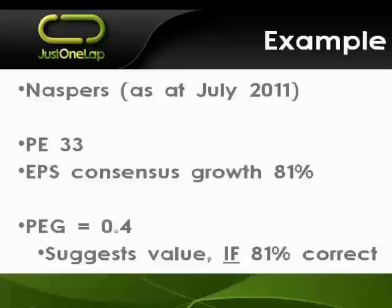If I drilled into the range, analysts were looking for between 1780 and 2387, so a fairly wide range — about 30% from top to bottom. Nonetheless, it gave an expectation of 81% growth for the year ending March 2012, then falling off to 26% for the year ending March 2013, which tells us this PEG is really only applicable for the current year. So Naspers is looking cheap if that growth comes in at 81%.